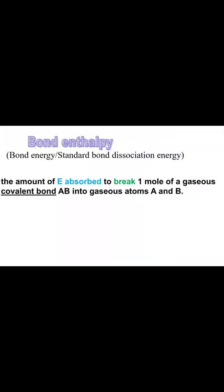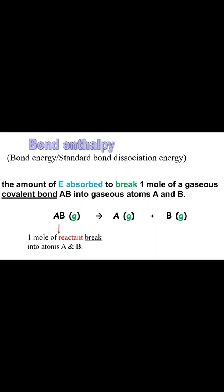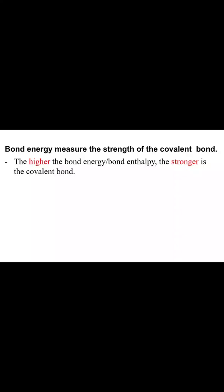Bond enthalpy is the amount of energy absorbed to break one mole of gaseous covalent bonds A–B into gaseous atoms A and B. Bond energy is always positive because bond dissociation always involves absorption of heat and the process is endothermic. Always bear in mind that the higher the bond energy or bond enthalpy, the stronger the covalent bond.